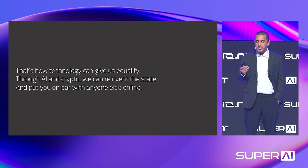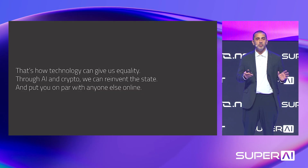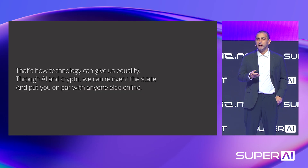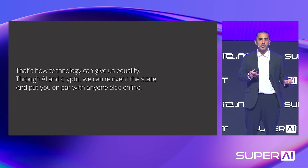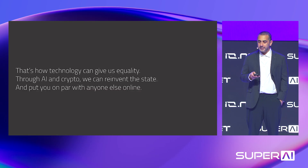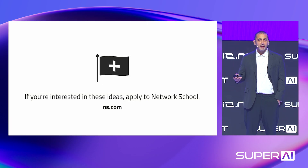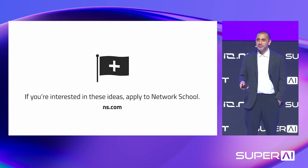That's how technology can give us equality. Through AI and crypto, we can reinvent the state and put you on par with anyone else online, with a decentralized AI agent or group of agents in your corner. If you're interested in these ideas, apply to Network School at ns.com. Thank you very much.